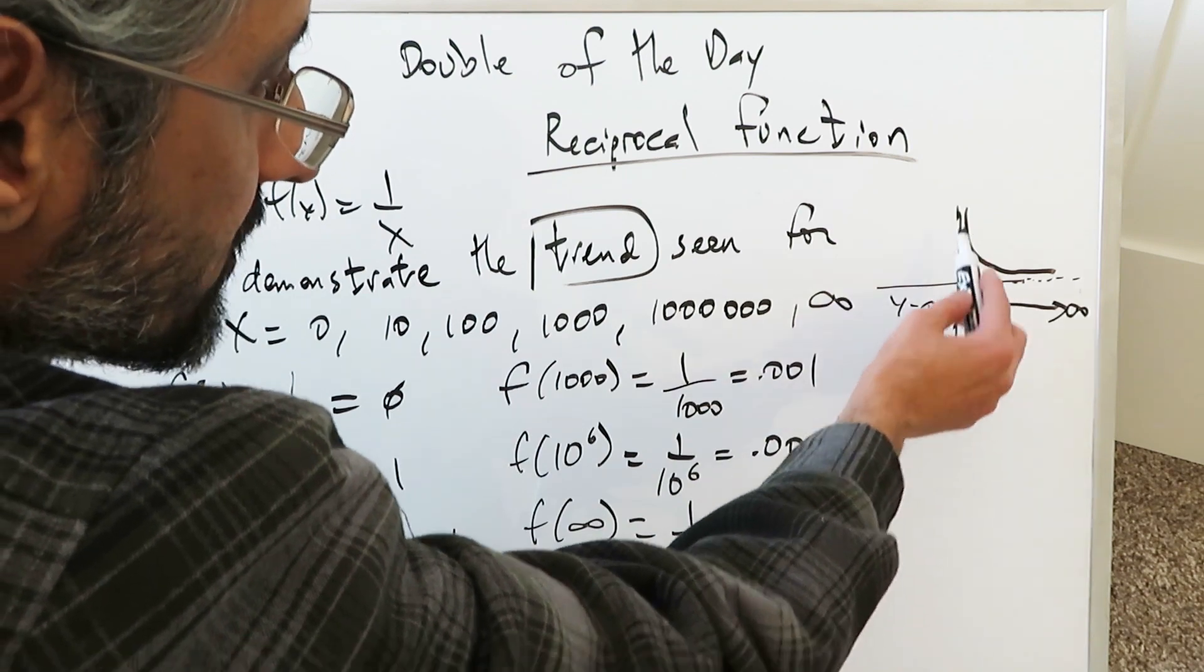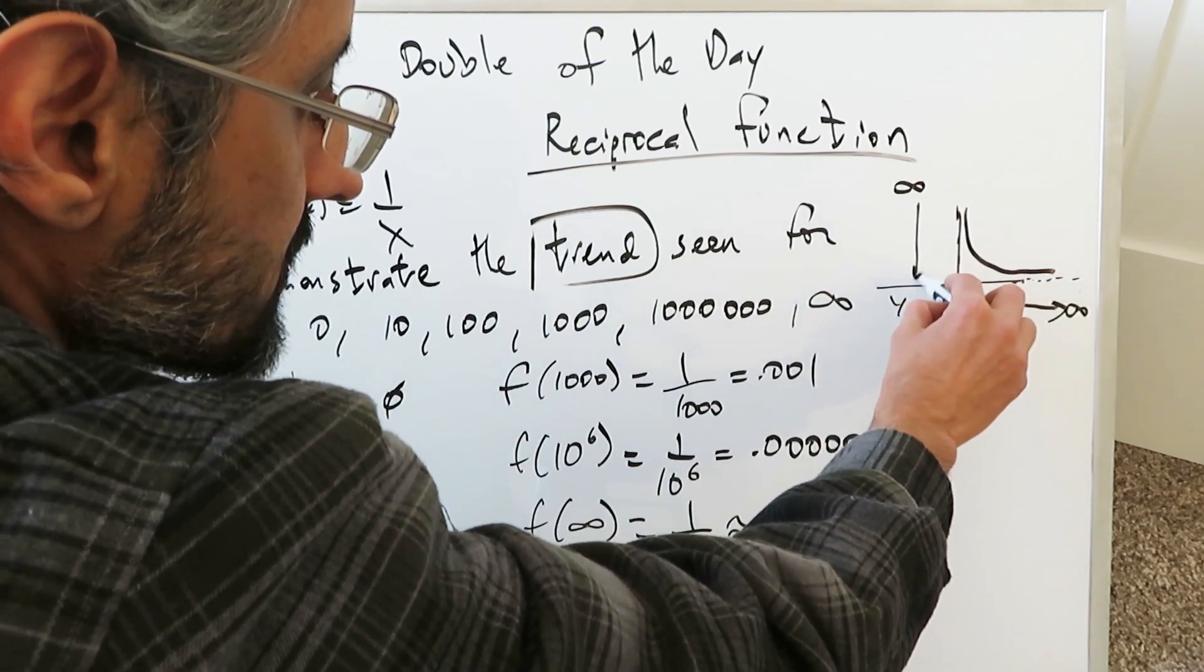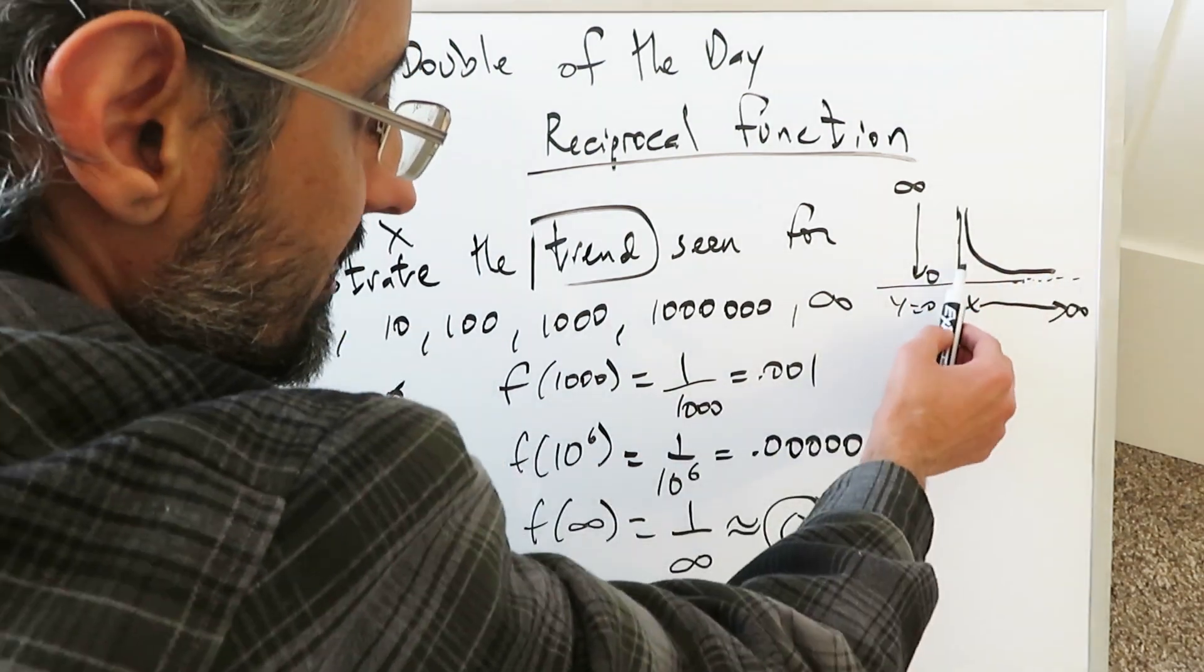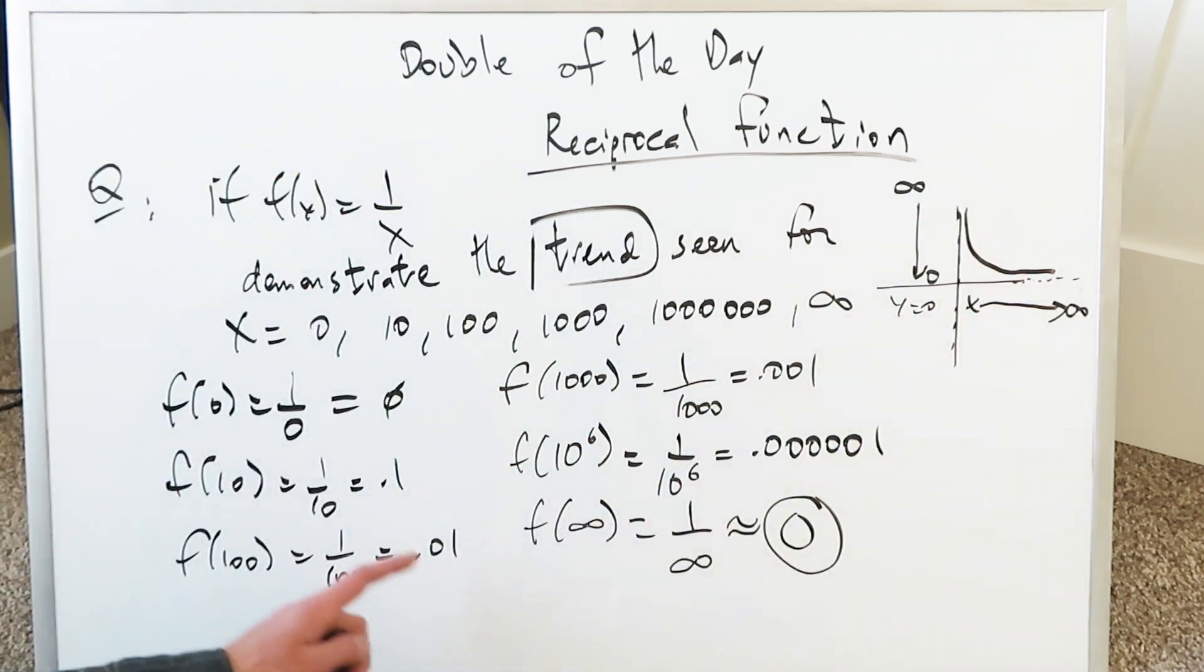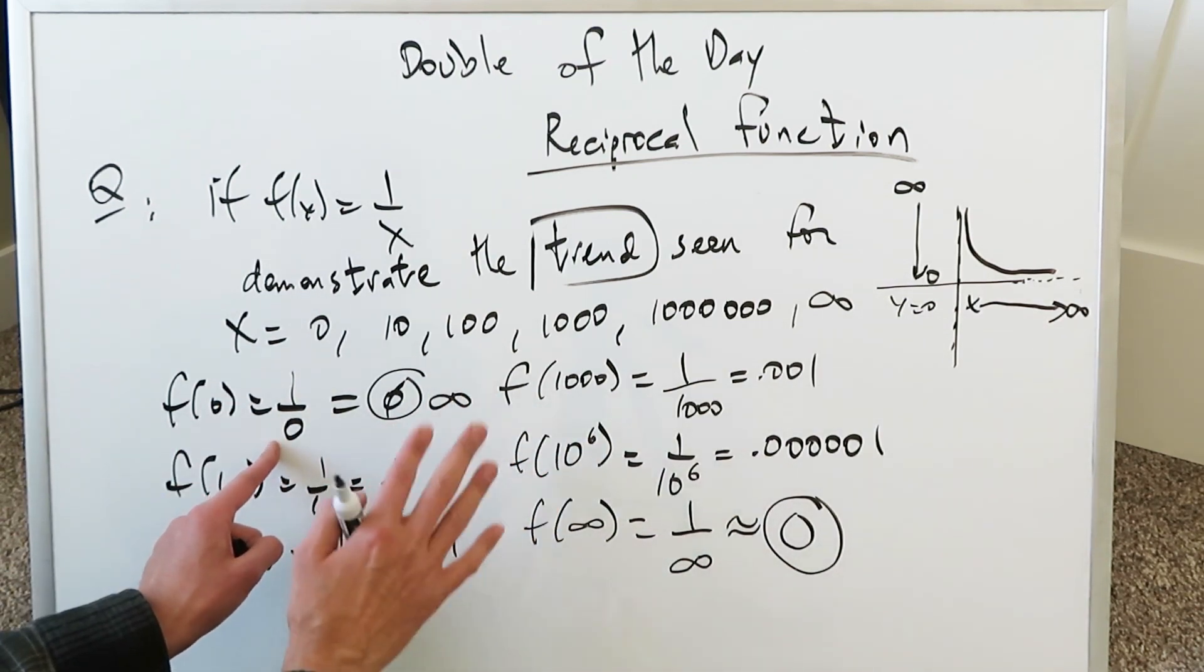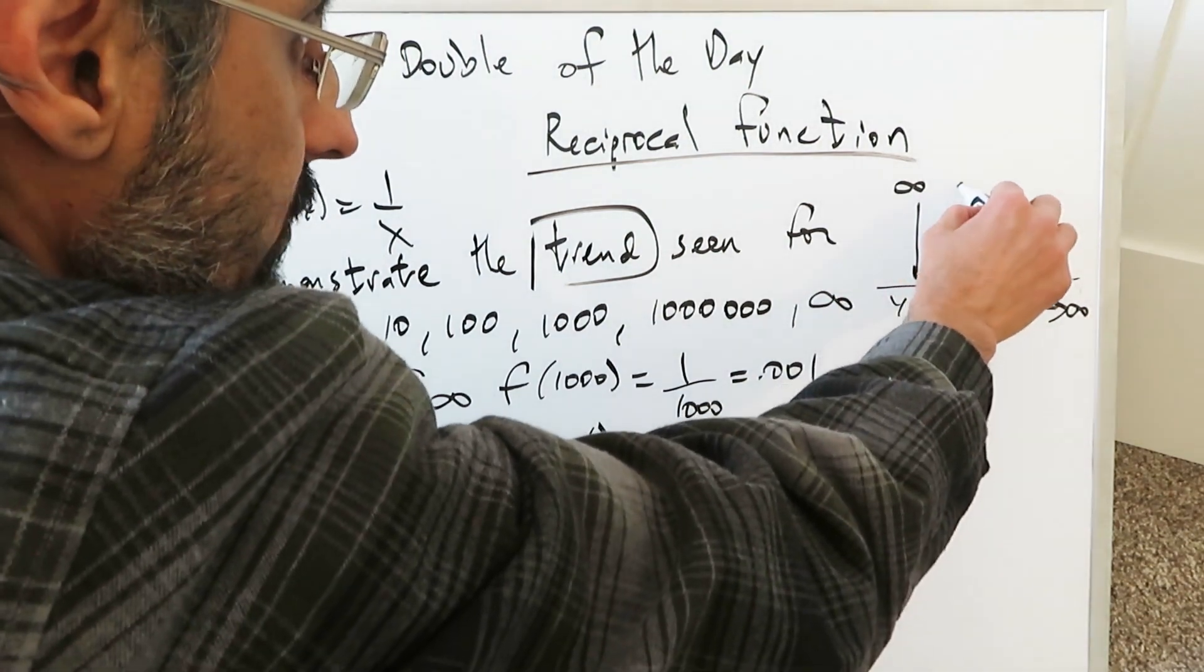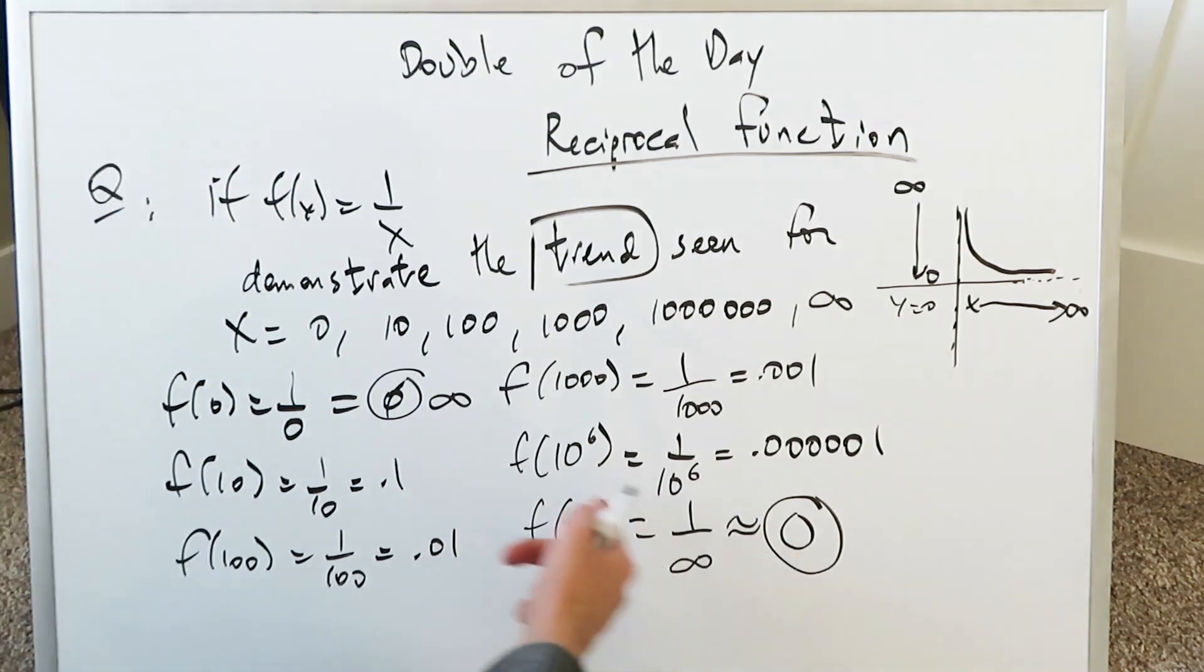Look at this reciprocal function. In terms of y values, it's coming here from a very large number to 0. As you're going from left to right, you're essentially going from a very large number to a very small number at 0. And this undefined can be construed as being an infinity. 1 divided by 0, you can mathematically consider that as an infinity. You're going here from an infinity y value all the way across to a 0 y value, and that's exactly the effect of your reciprocal function.